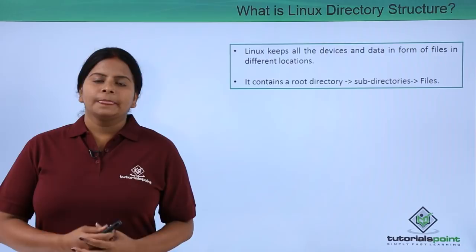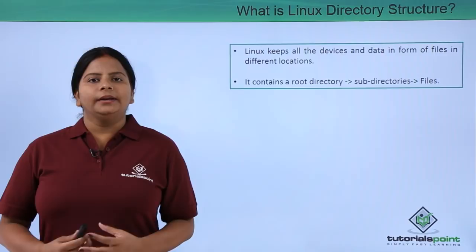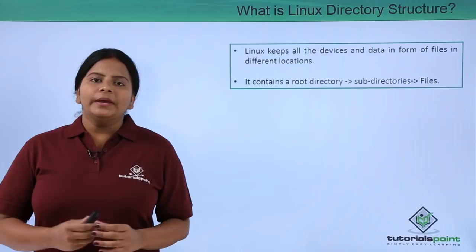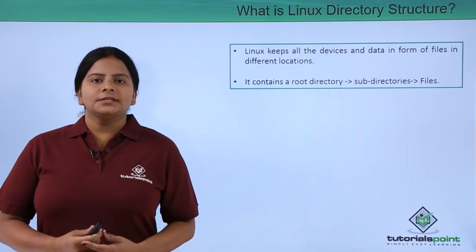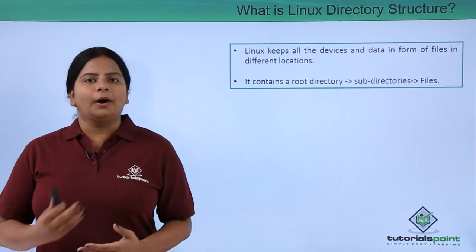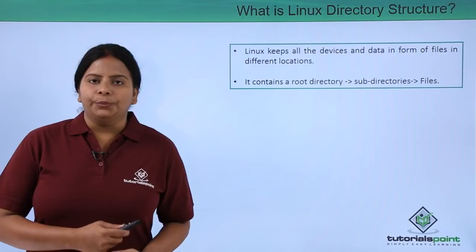In Linux, everything is stored as files and folders — even your devices are stored as files in particular folders. The folders have multiple sub-directories and sub-folders. When you install the operating system, you won't find any C Drive, D Drive, E Drive or My Computer. Instead, everything starts from the forward slash `/`, which is called the root mount point, under which you will find different directories.